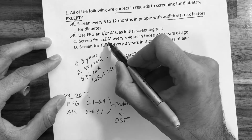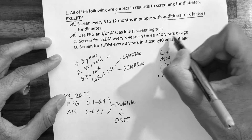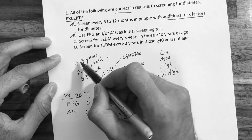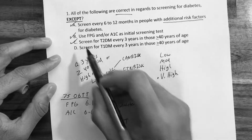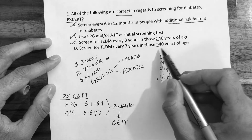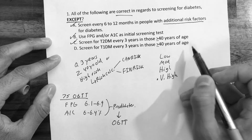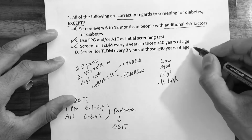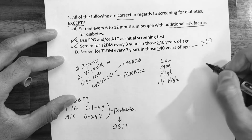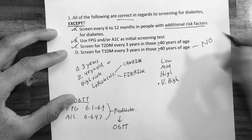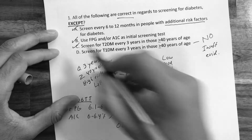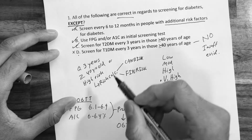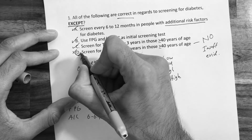Option C — screen for type 2 diabetes every three years in those greater than or equal to 40 years of age — is correct as we determined. Option D — screen for type 1 diabetes every three years in those greater than or equal to 40 years of age — is incorrect. We don't actually screen for type 1 diabetes; there's insufficient evidence for it. So all of these are correct except option D, which is our answer.